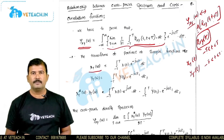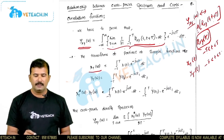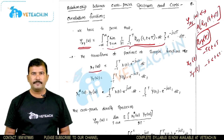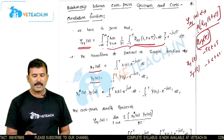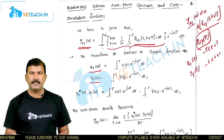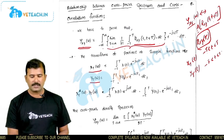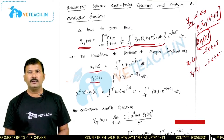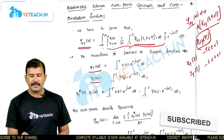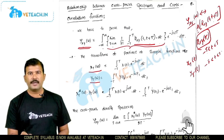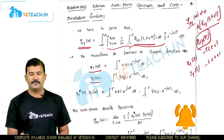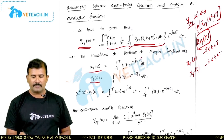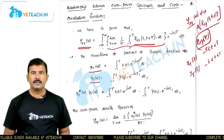The Fourier transform of x_T(t) is X_T(ω) = integral from minus T to T of x(t) e^(−jωt) dt. Similarly, the Fourier transform of y_T(t) is Y_T(ω) = integral from minus T to T of y(t₁) e^(−jωt₁) dt₁. I have used t₁ as the variable for convenience in proving the relation.